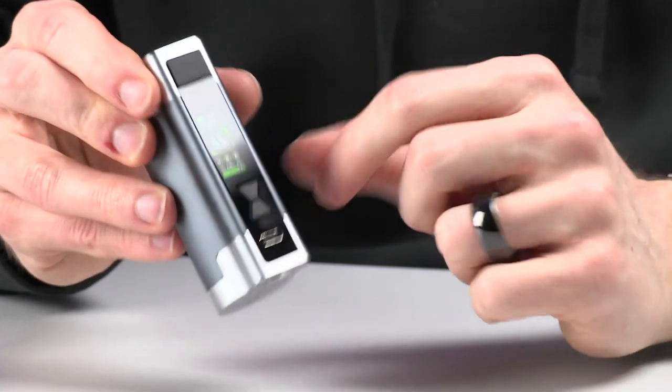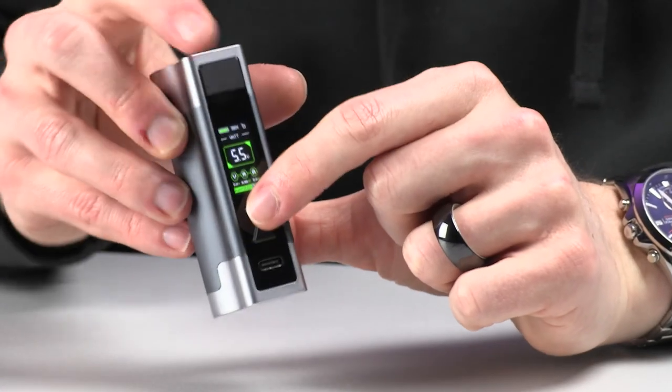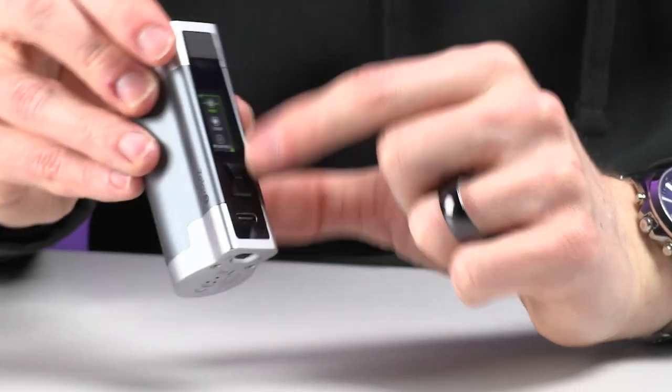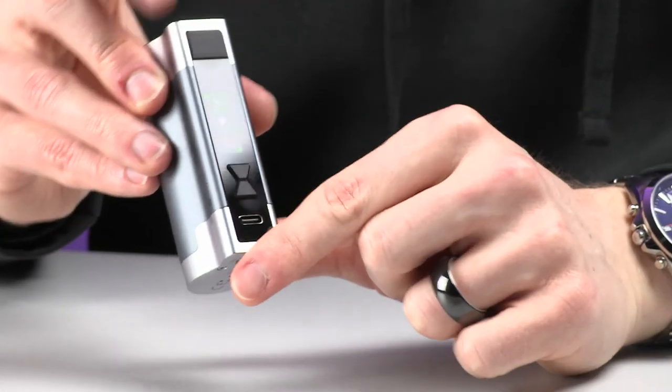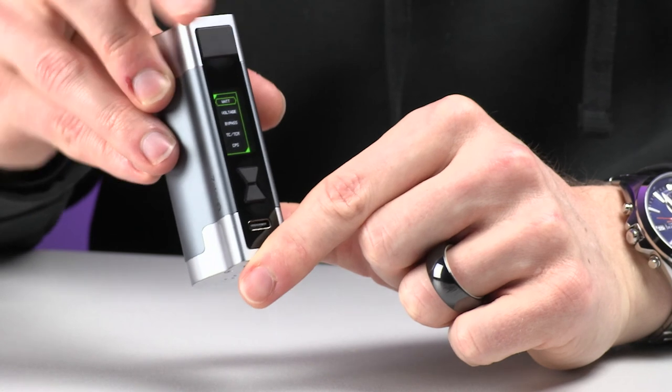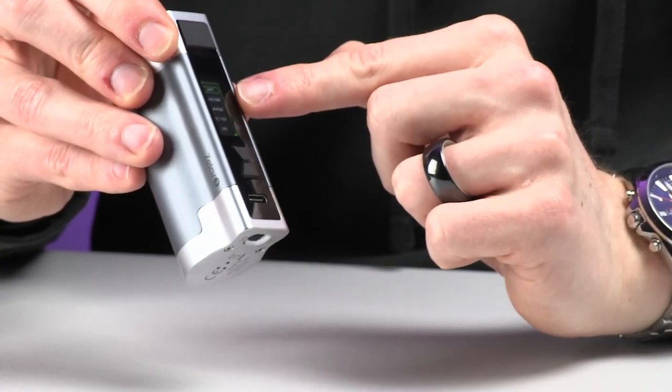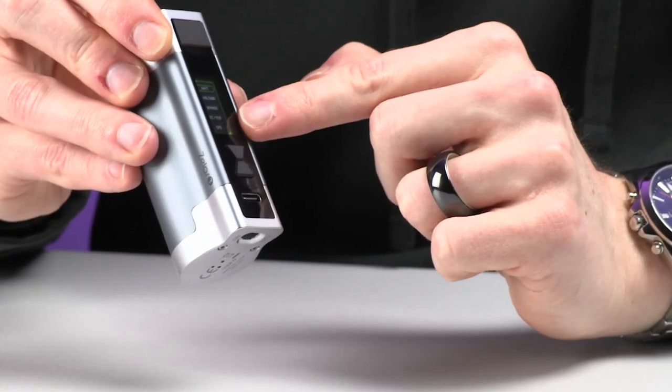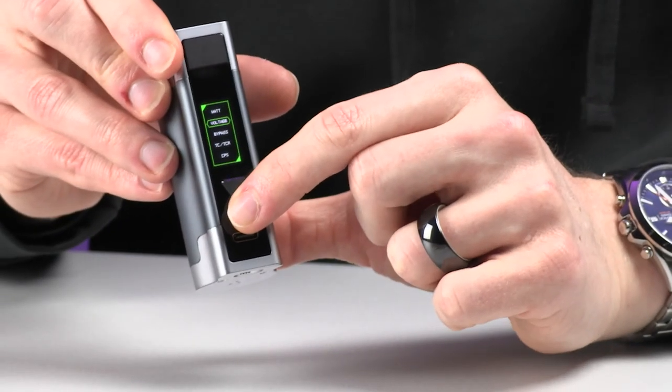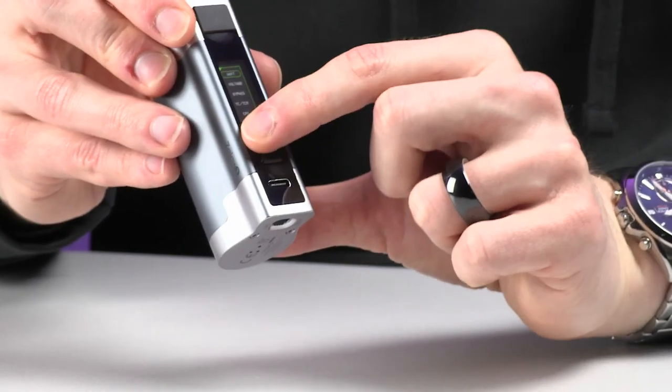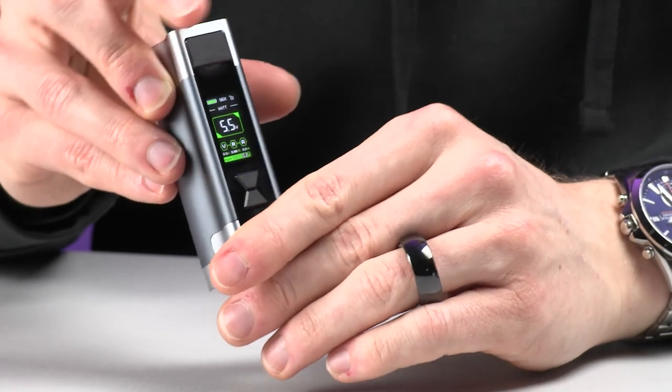Now to get into the main menu, what you need to do is press the up button and the power button. And then on the top, we have mode. So if we press the fire button to enter that, we have wattage, voltage, bypass, temperature control, or CPS. And you can cycle through those with this just here. Now I'm going to choose wattage, because that's my preferred one.